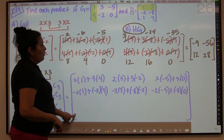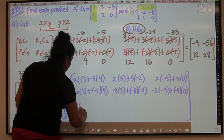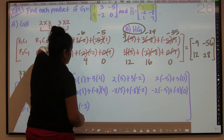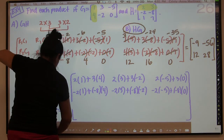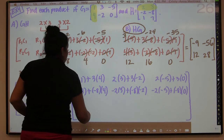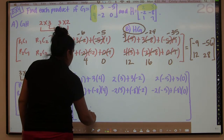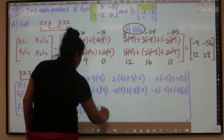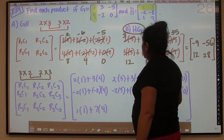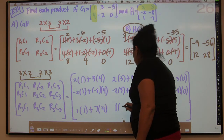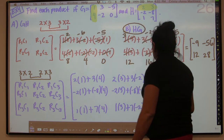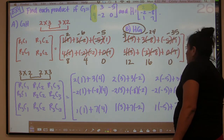My last row is going to be row three, which is one and seven. So one times one plus seven times four for column one. Then same row — one times three plus seven times negative two for column two. And lastly, one times negative five plus seven times zero for column three.